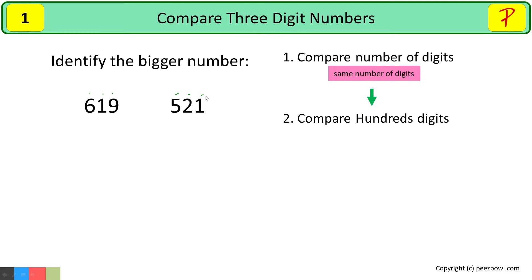When both the numbers have equal number of digits, then compare the numbers at the hundreds place. The number having greater hundreds place value will be the greater number. In 619, we have 6 at the hundreds place, and in 521, we have 5 at the hundreds place. As 6 is bigger than 5, so 619 will be bigger than 521.